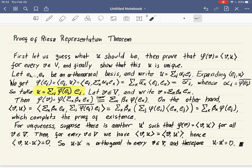So this will be our guess. This is the formula for the vector U that is our candidate to represent the linear function φ. So now, let's prove that indeed U is the representant of φ.